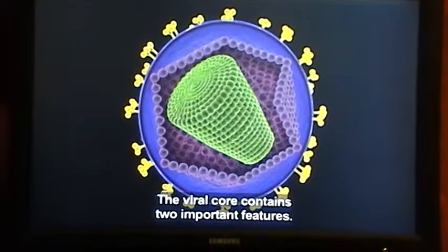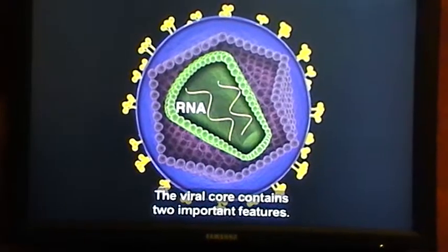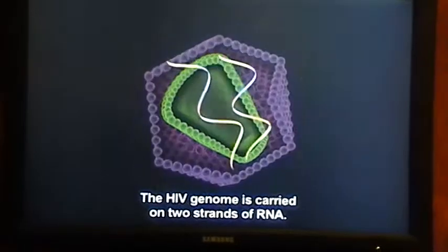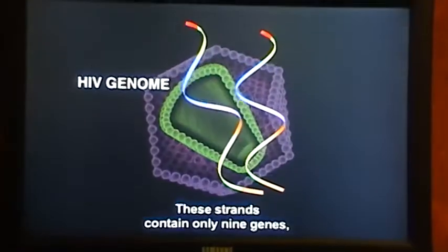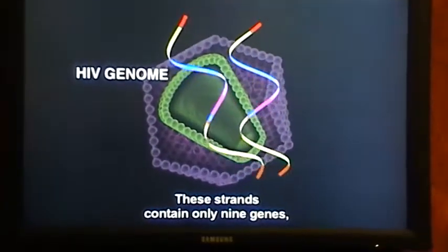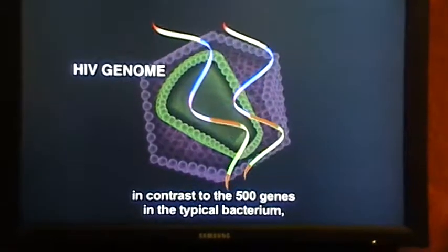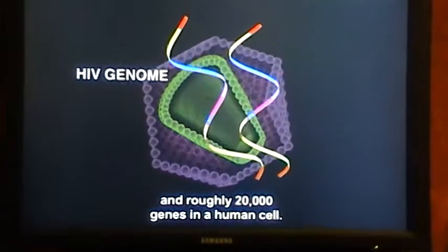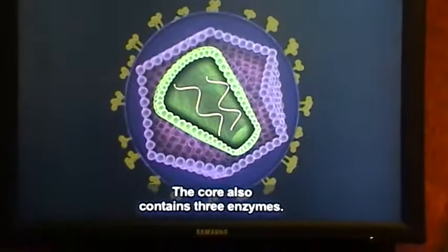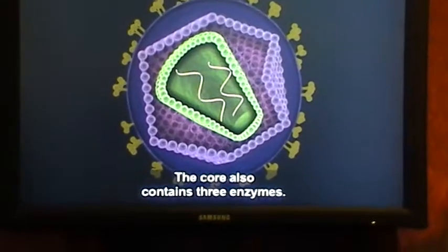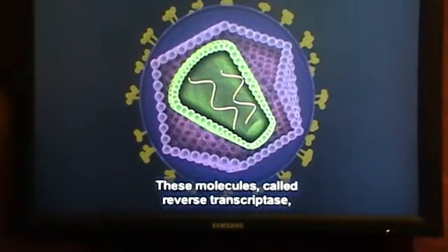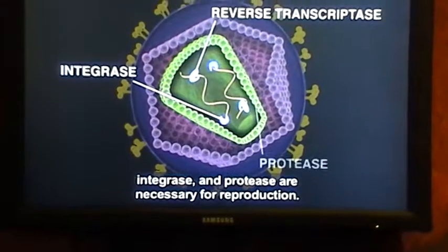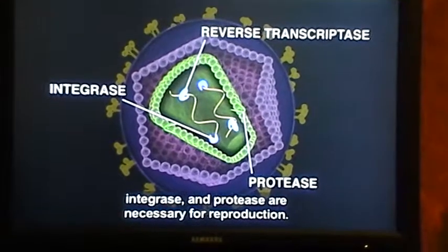The viral core contains two important features. The HIV genome is carried on two strands of RNA. These strands contain only nine genes, in contrast to the 500 genes in the typical bacterium and roughly 20,000 genes in a human cell. The core also contains three enzymes — reverse transcriptase, integrase, and protease — which are necessary for reproduction.